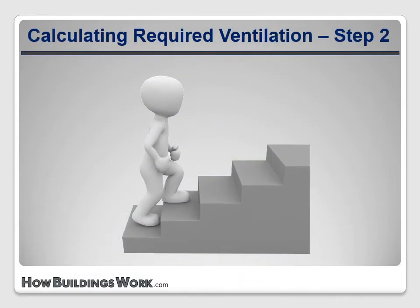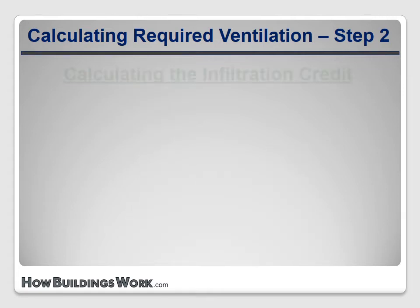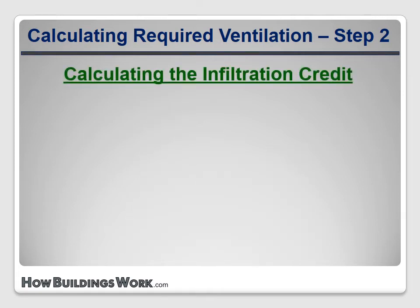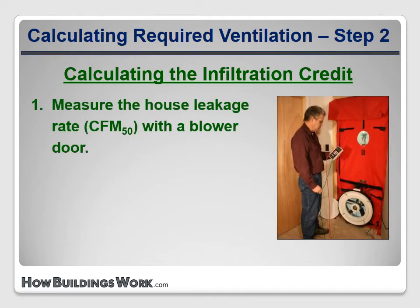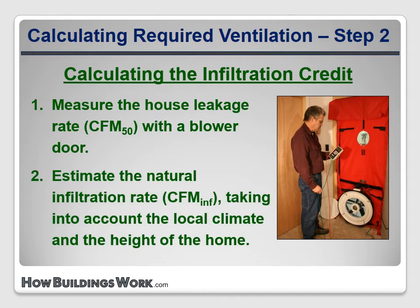Remember, that number we calculated is the total desired ventilation rate, but some of that is satisfied by natural air leakage. So the next step is that we get to apply an infiltration credit. We know what the blower door reading is — 850 CFM — but that's the leakage rate at the 50 pascal test pressure. We need to use that blower door reading to estimate the leakage under normal, natural conditions, using the local climate and the height of the house.